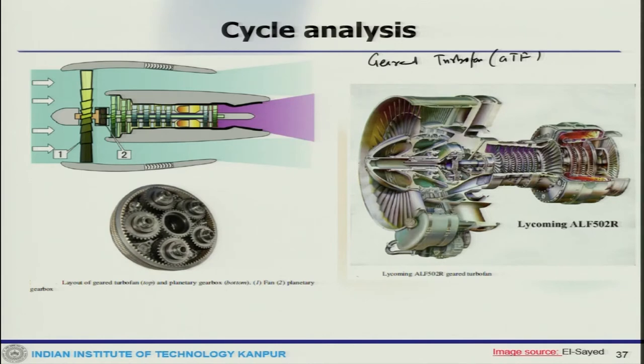Here the fan is normally part of the low spool. Both fan and LPT are turning at the same speed. However, this is often a compromise because the fan really operates more efficiently at low rotational speed while the rest of the low spool is more efficient at higher speed. A reduction gear put in between the components makes it possible for the fan and the low spool to run at their optimum speed. This is an example, the Lycoming ELF 502R engine, produced by Lycoming and later Honeywell Aerospace.